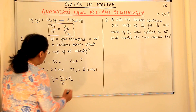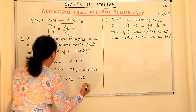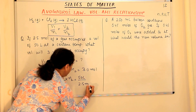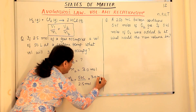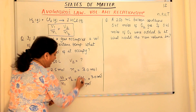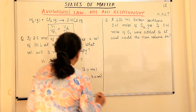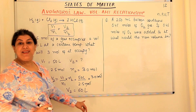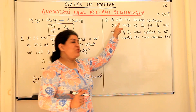Substituting the values, we get V₂ = (50 liters / 2.5 mol) × 3.0 mol. The mole units cancel, and when you calculate this, you get 60 liters. So V₂ = 60 liters. That is your answer. Moving on to the next problem.